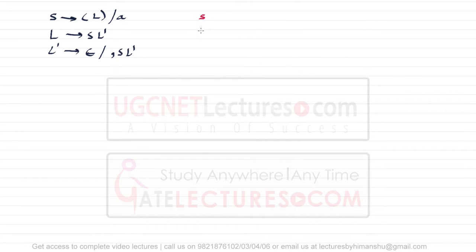Let's look at examples of First and Follow. Assuming we have the following grammar: S derives opening-bracket L closing-bracket or small-a, and L derives S L-dash where L-dash derives epsilon or comma S L-dash. The terminals here are opening-bracket, closing-bracket, small-a, and comma. We want to find the First of S, L, and L-dash.